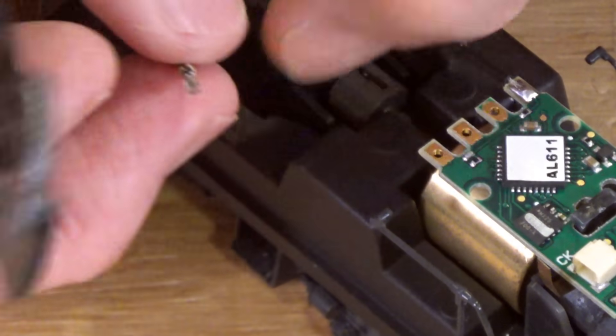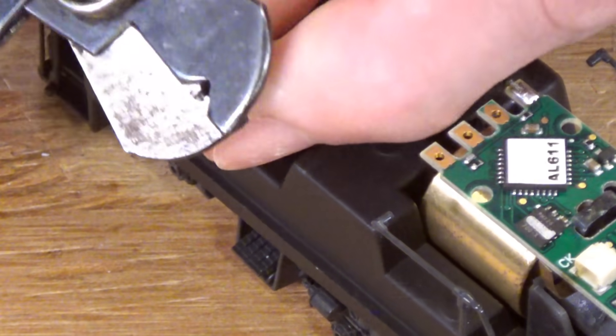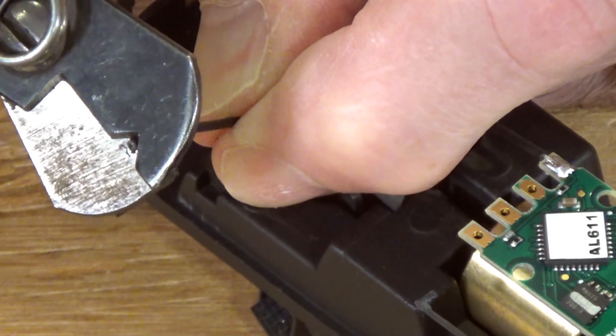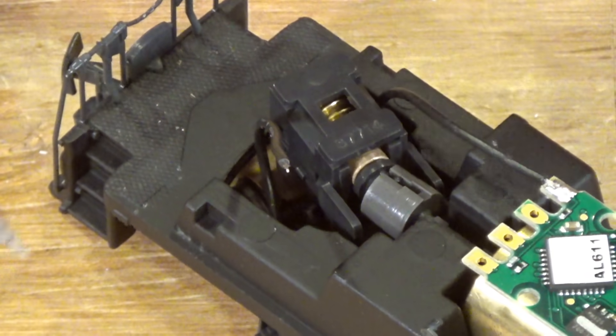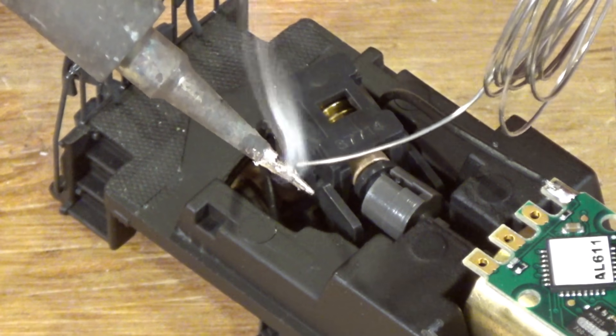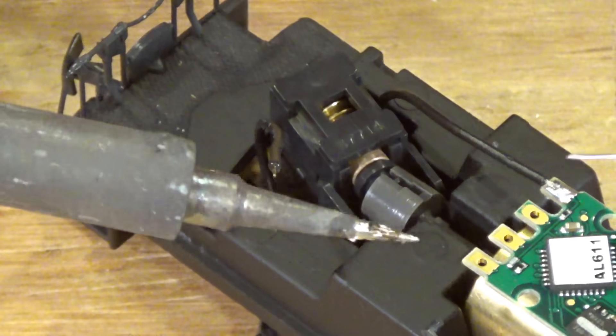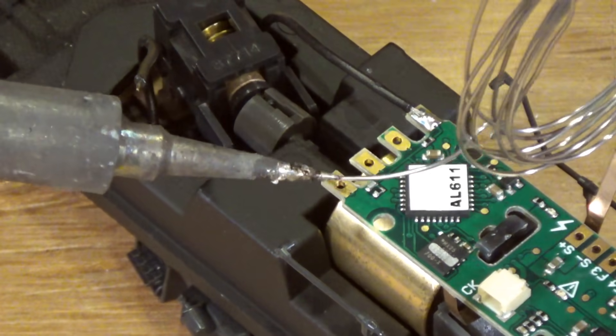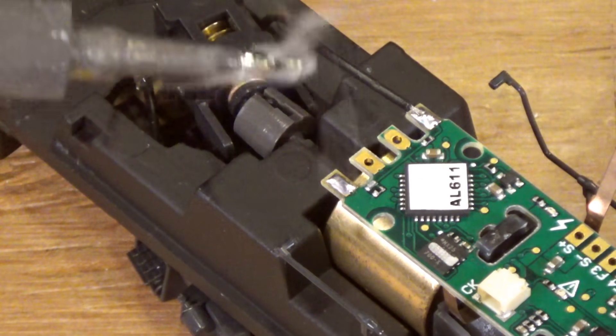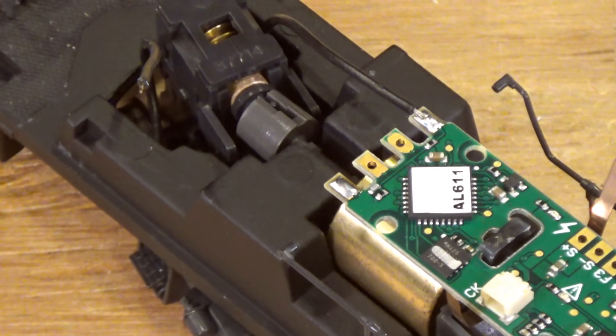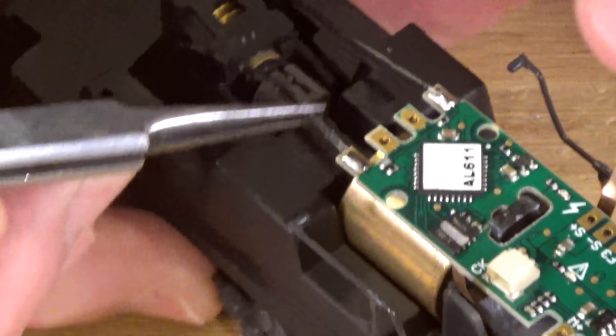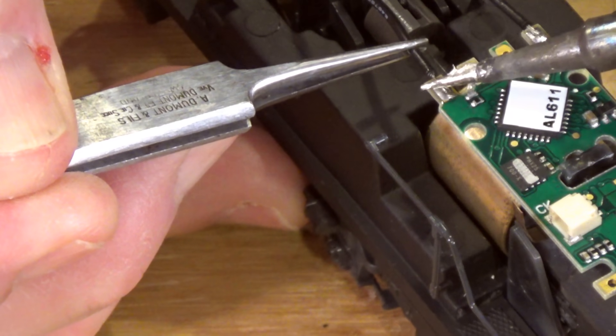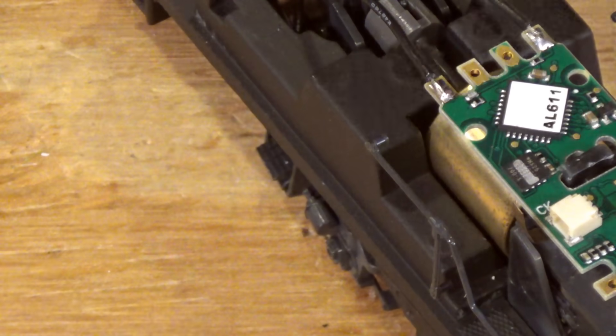I'll go ahead and do one more, just clip it off here and strip a little bit of insulation off of the wire and then we'll tin the wire here. Okay, and we'll tin the pad. And the great thing about these circuit traces here is it takes very little solder and very little heat to get a good solder joint. So that's all there is to that.